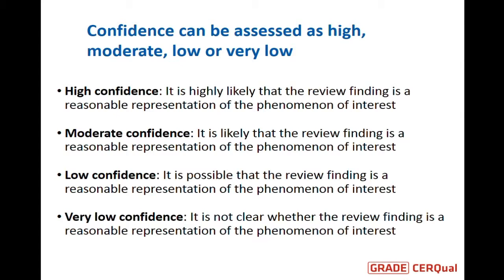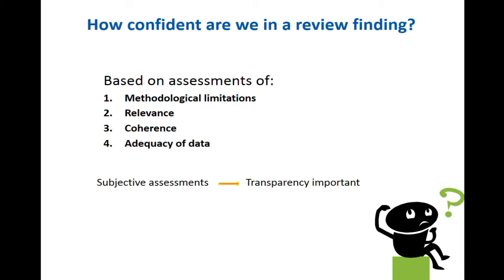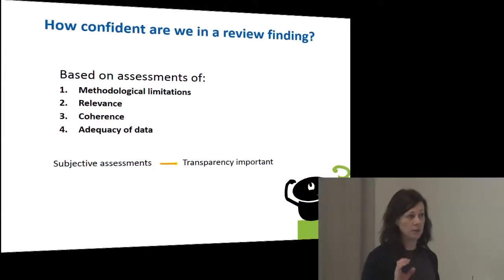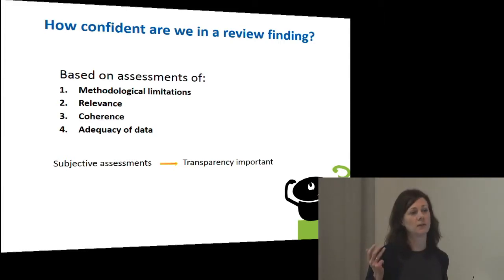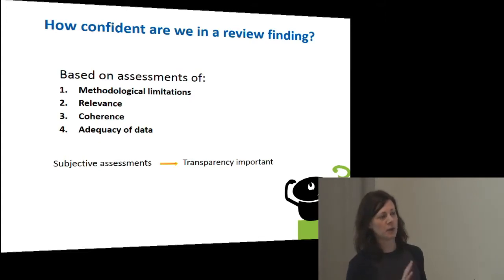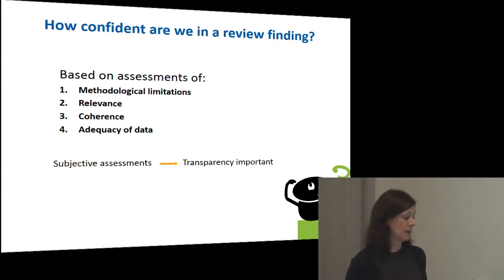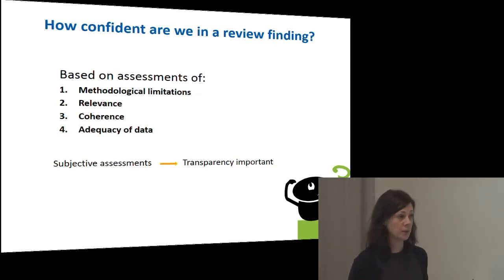To do these assessments, you consider four different components: methodological limitations, relevance, coherence, and adequacy of data. It's important to stress that you're looking at each individual review finding and considering these components — and this is always a subjective assessment. There are no strict rules or guidance. It's not a mechanical process in any way. You need to make subjective assessments and therefore you also have to be very transparent with your assessments.